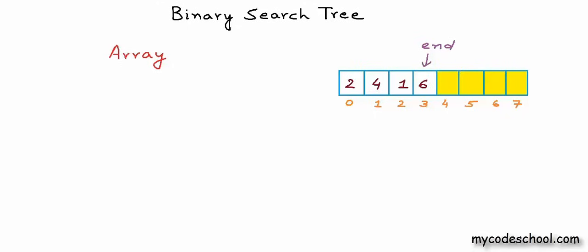In this array, we have integers from index 0 to 3, and the rest of the array is available space. To search for some x in the collection, we will have to scan the array from index 0 till the end. In the worst case, we may have to look at all the elements in the list. If n is the number of elements, time taken will be proportional to n.